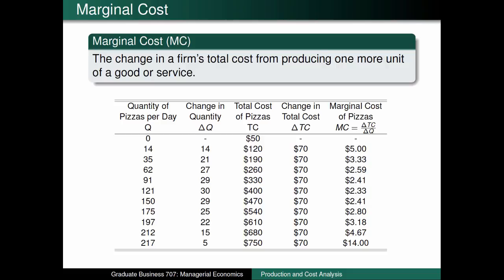More importantly, notice that marginal cost initially decreases and then increases. This is directly connected with the law of diminishing marginal returns discussed in the previous recording, since the initial boost in worker productivity causes the cost of additional pizzas to go down when producing small batches of pizzas. Whereas costs start to skyrocket when the law of diminishing marginal returns sets in, such that additional workers provide a smaller boost to the production of pizzas. However, these unproductive workers get paid the same as the first few highly efficient employees.